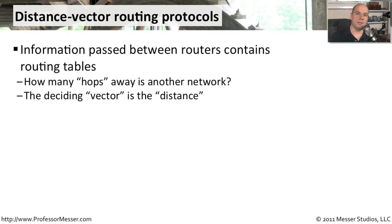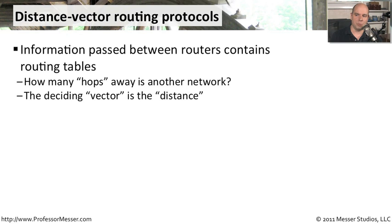If your routing vector is based on distance, then your router is going to be most concerned about how many hops it takes to finally get to that destination network. A distance vector routing protocol keeps a table of where all of those networks are, and it knows exactly how many hops it is between its router and where the final destination might be. When it's calculating which interface to send packets out, it makes a determination of which way is shorter based on how many hops away.